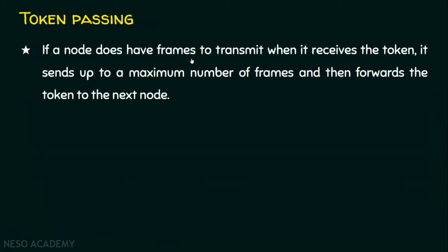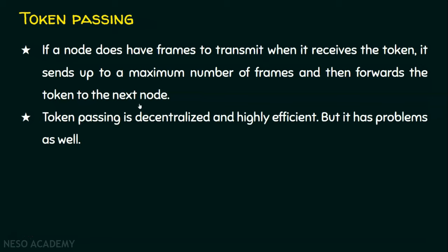If the node doesn't have any frame, it has to forward the token immediately to the next node. If a node does have frames to transmit when it receives the token, it sends up to a maximum number of frames, then forwards the token to the next node. Token passing is decentralized — there is no master in the scheme, so it is not a centralized approach. It's highly efficient in terms of collision, because there will not be any collision — only the station holding the token can send data.